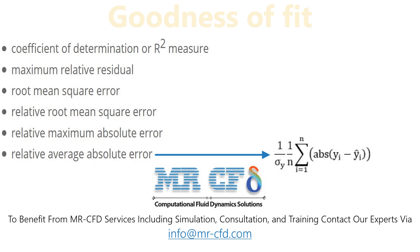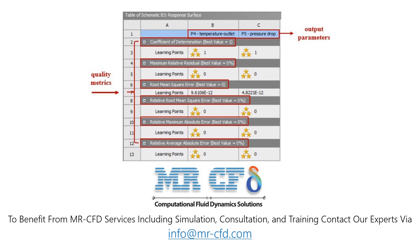This error criterion is used when the number of sample design points is less than 30. The closer this criterion is to zero, the higher the quality of the response surface. For example, suppose there are two output parameters or variables, including temperature outlet and pressure drop, on which the effects of changes in input parameters produce a response surface.